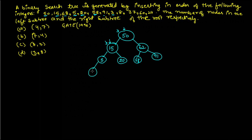91 is greater than 50 and greater than 62 so it goes to the right. 3 is less than 50, less than 15, and less than 5 so it goes to the left. 8 is less than 50, less than 15, but greater than 5 so it goes to the right. 37 is less than 50, greater than 15, and greater than 20 so it goes to the right. 60 is greater than 50, less than 62, but greater than 58 so it goes here.